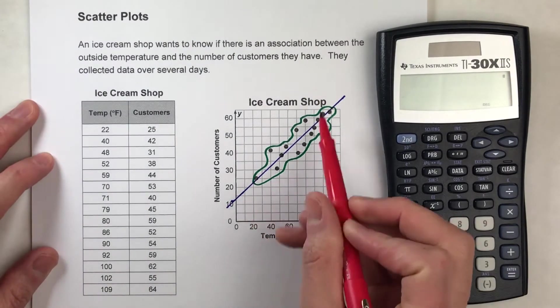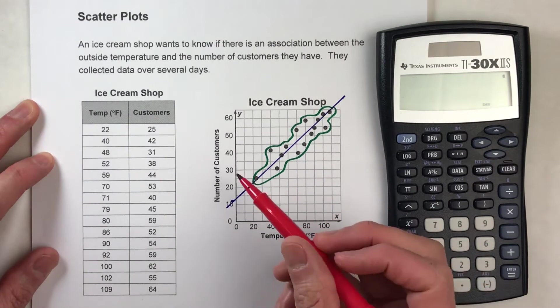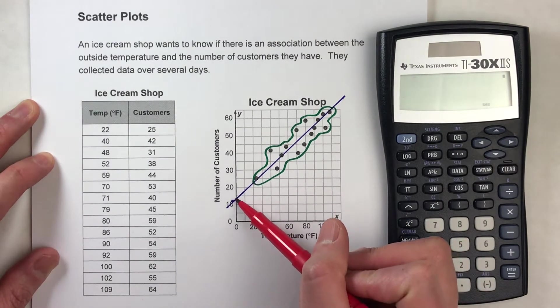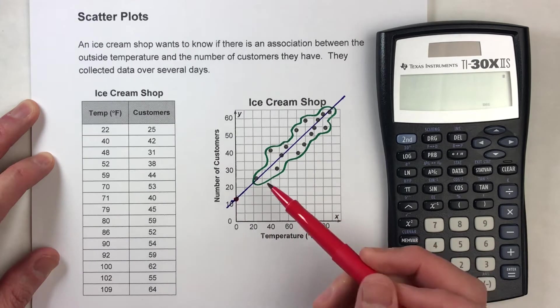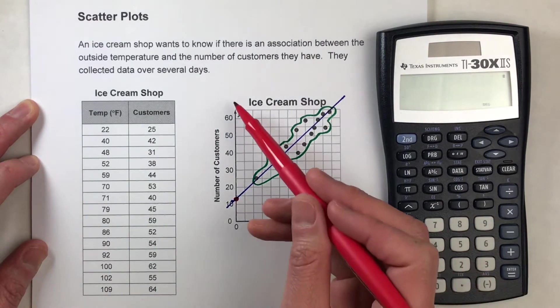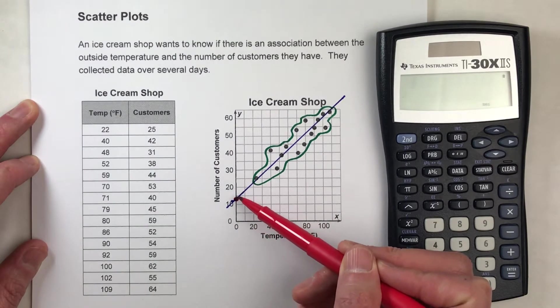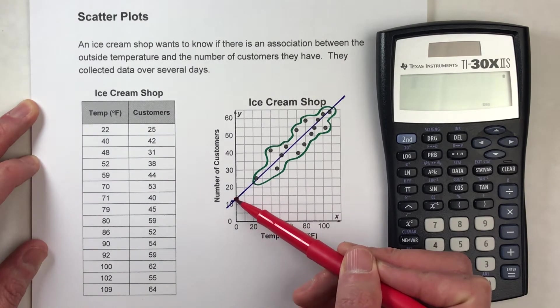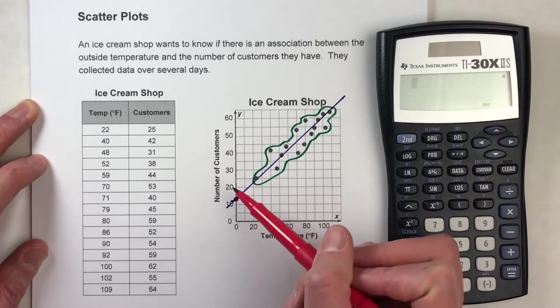But let's find the equation for this line here. I'll start with the y-intercept because that's the easiest thing to find. Now notice, the line crosses the y-axis here. Now based on the scale, this is 10, this is 20, right above it's 15, it's a little less than 15. I'll say this is 13, okay?